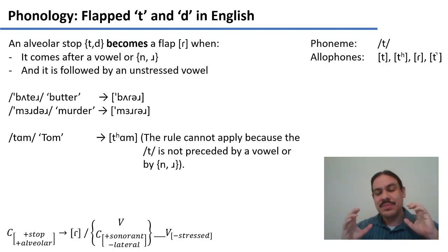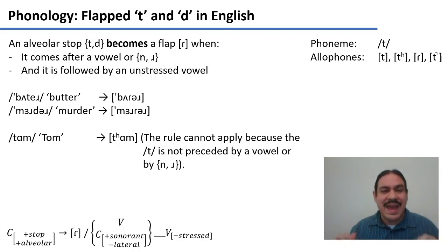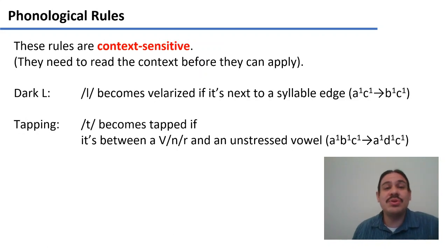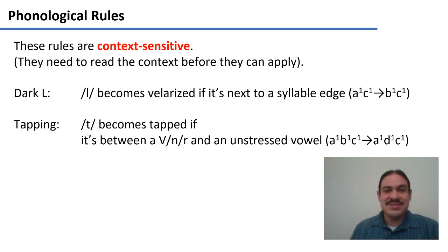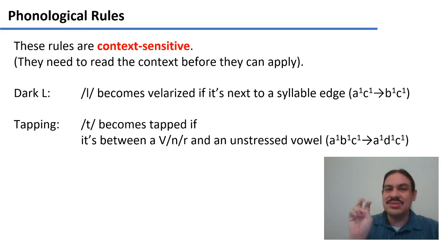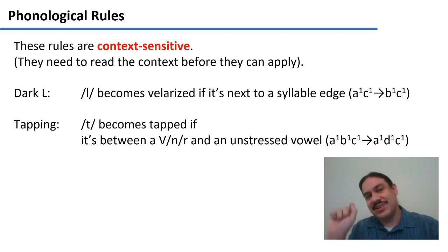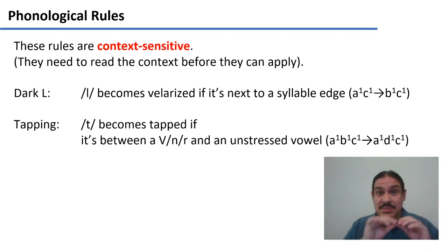So as you can see, phonemes are an abstract reality in your brain — the idea that there's a T there — and the actual sounds are different: sometimes a stop T, sometimes something that sounds more like an R. All these rules are context-sensitive; they need to read the context before they can apply. In the case of the dark L, the L becomes dark or velarized if it's at the end of a syllable or next to a syllable edge — symbol A (the L) next to C (the edge of the syllable) becomes a different symbol B (velarized L).